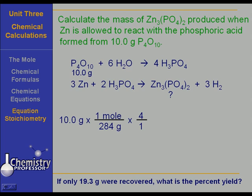So now we are ready to go to zinc phosphate. What is the mole to mole ratio there? It is 1 mole of zinc phosphate over 2 moles of phosphoric acid. We are now at moles of zinc phosphate. We multiply that by 386 grams per mole, which is the gram molecular weight of zinc phosphate.